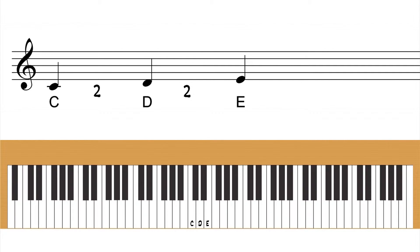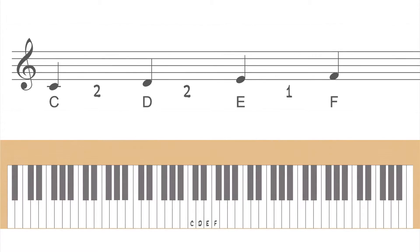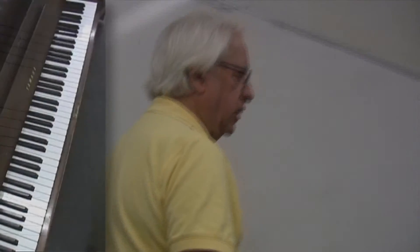Some kind of F. What kind of F is one half step above E? F natural. F sharp is two half steps. Now we have the first four notes of the C major scale. Let me play for you. Correct?